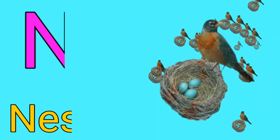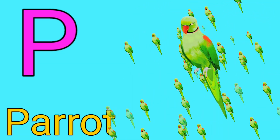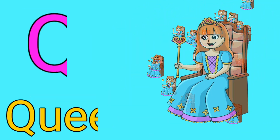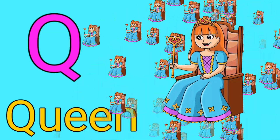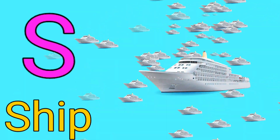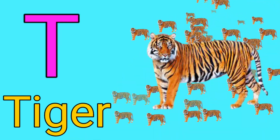N for nest. O for orange. P for parrot. Q for kiwi. R for orange. S for sheep. T for tiger.